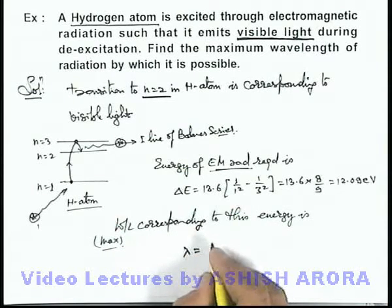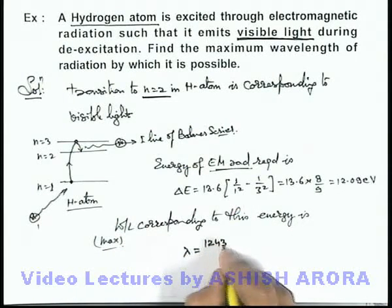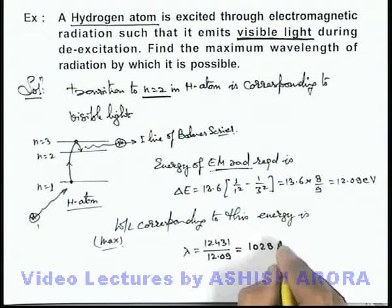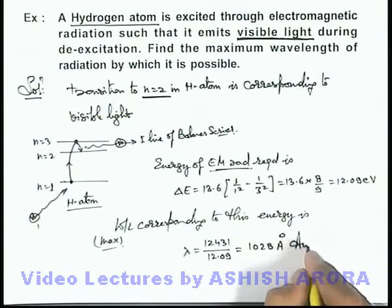So this lambda can be directly written as 12431 divided by 12.09, which will give us the value 1028 directly in angstrom. That will be the answer to this problem.